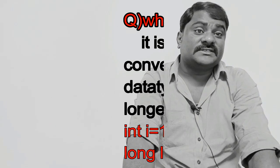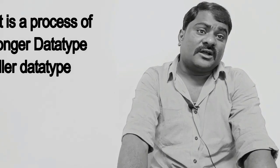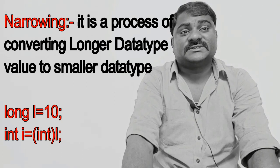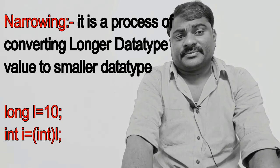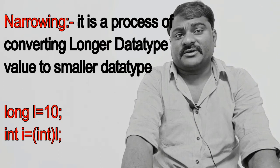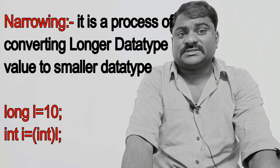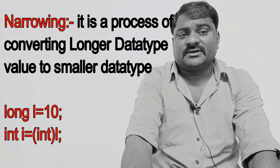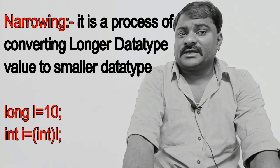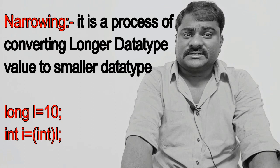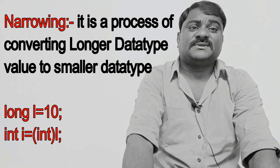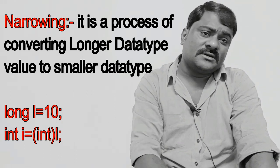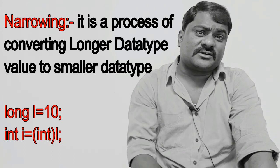What is narrowing? It is a process of converting a longer data type value to a smaller data type. Narrowing requires explicit typecasting, so you have to write the code separately. For example: long l equal to 10, int i equal to (int)l. Narrowing requires explicit typecasting and it supports C++ style of typecasting. You can also call this concept downcasting.